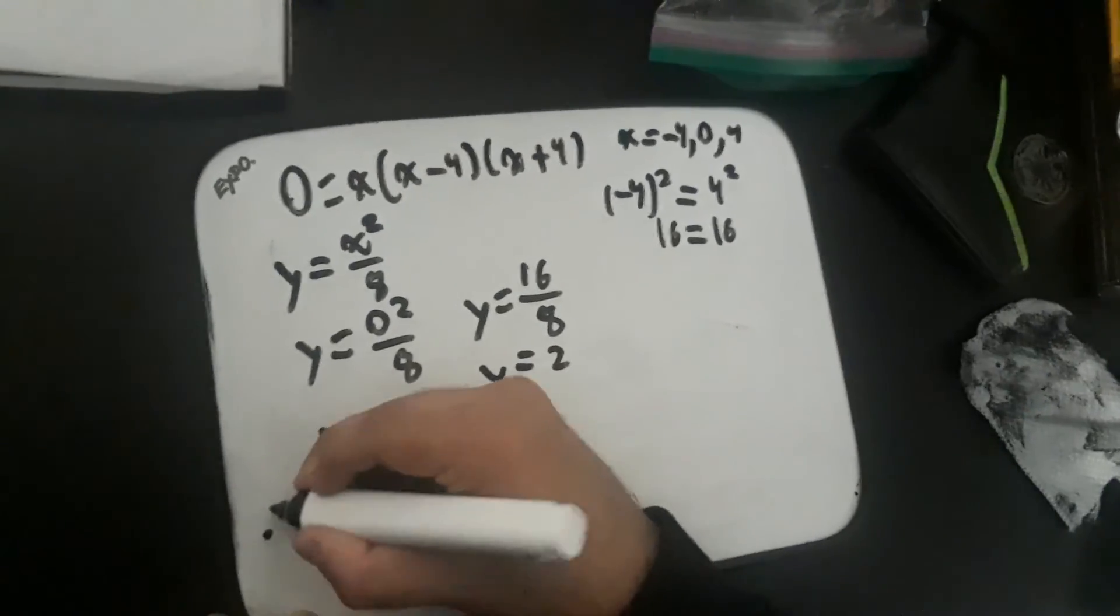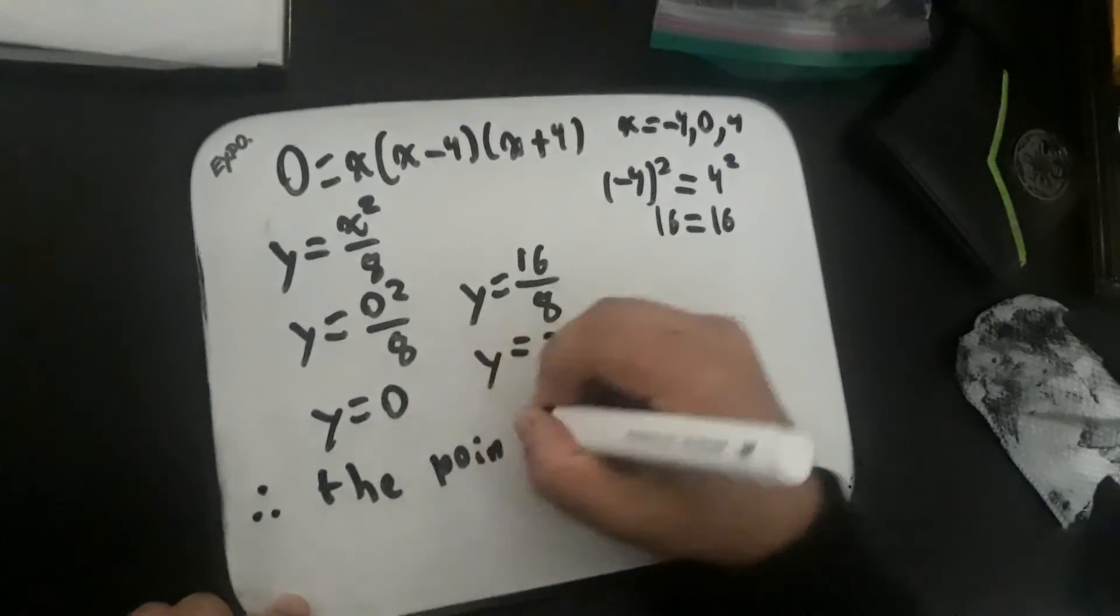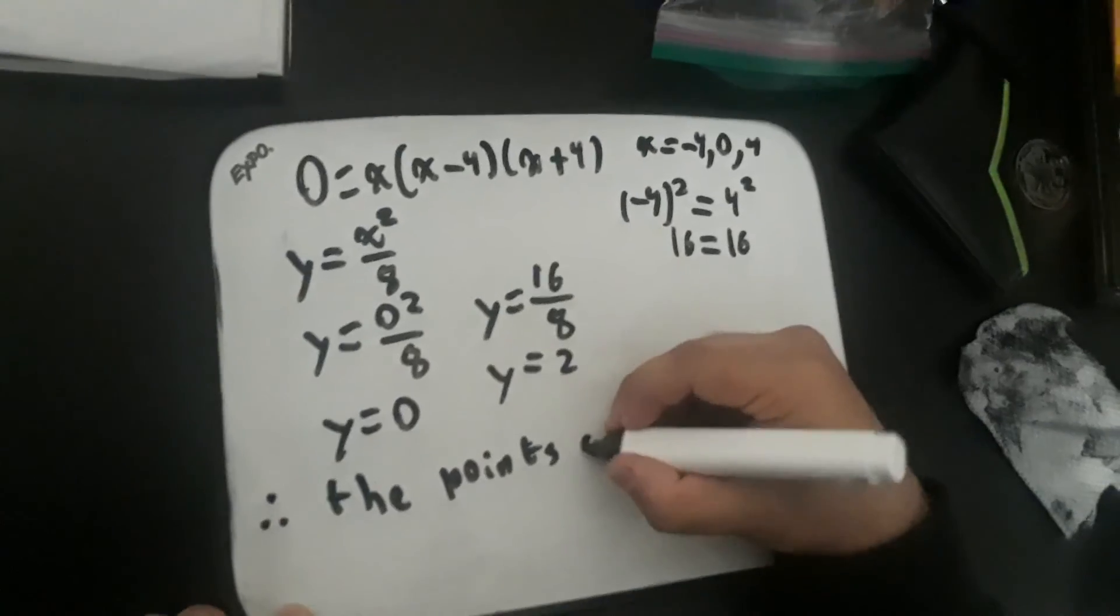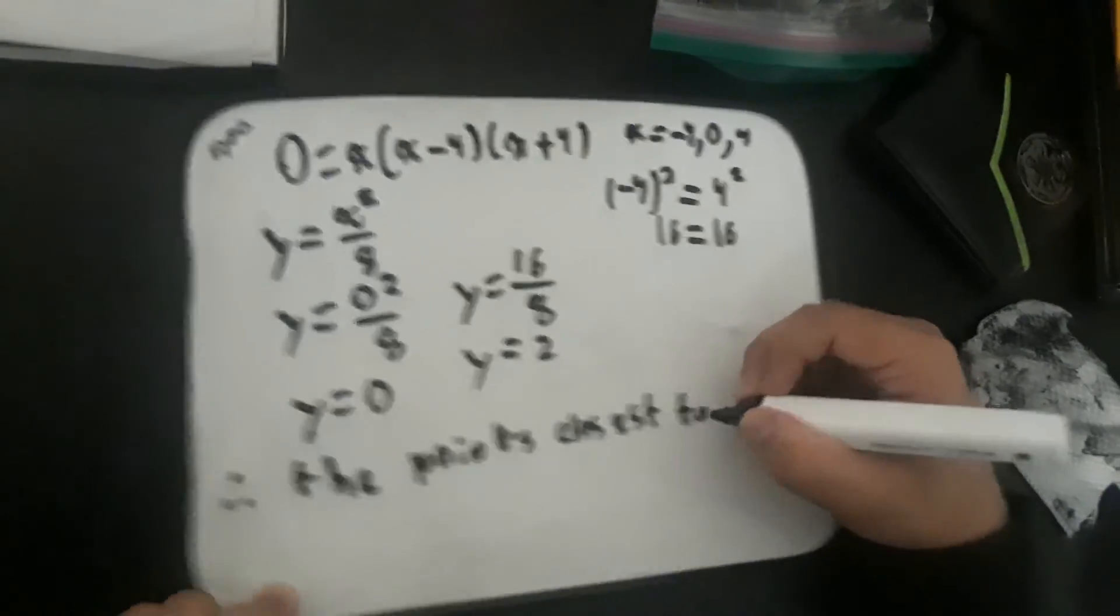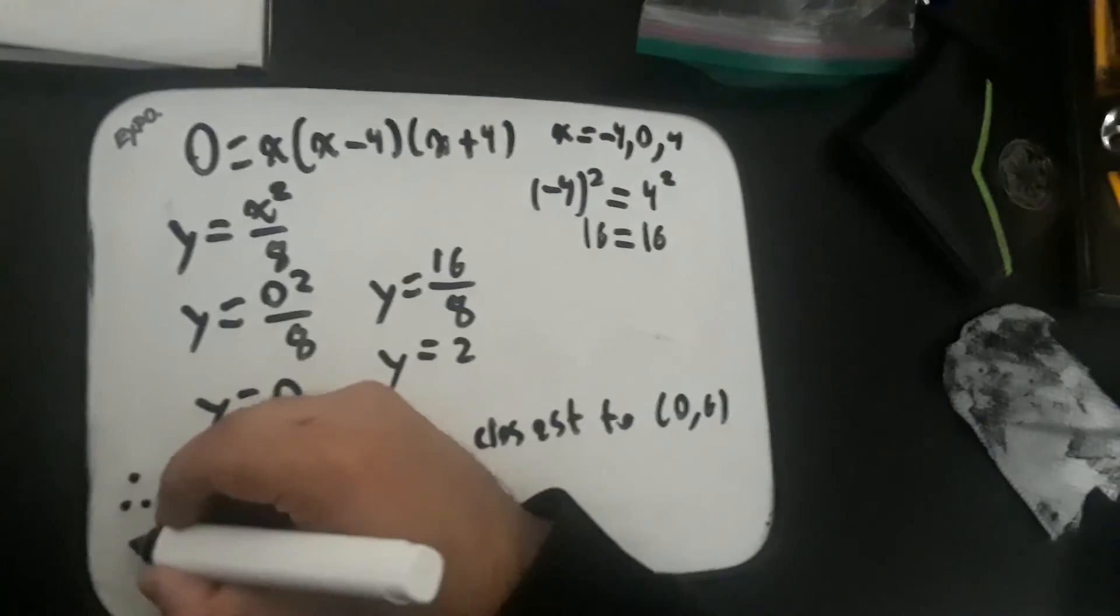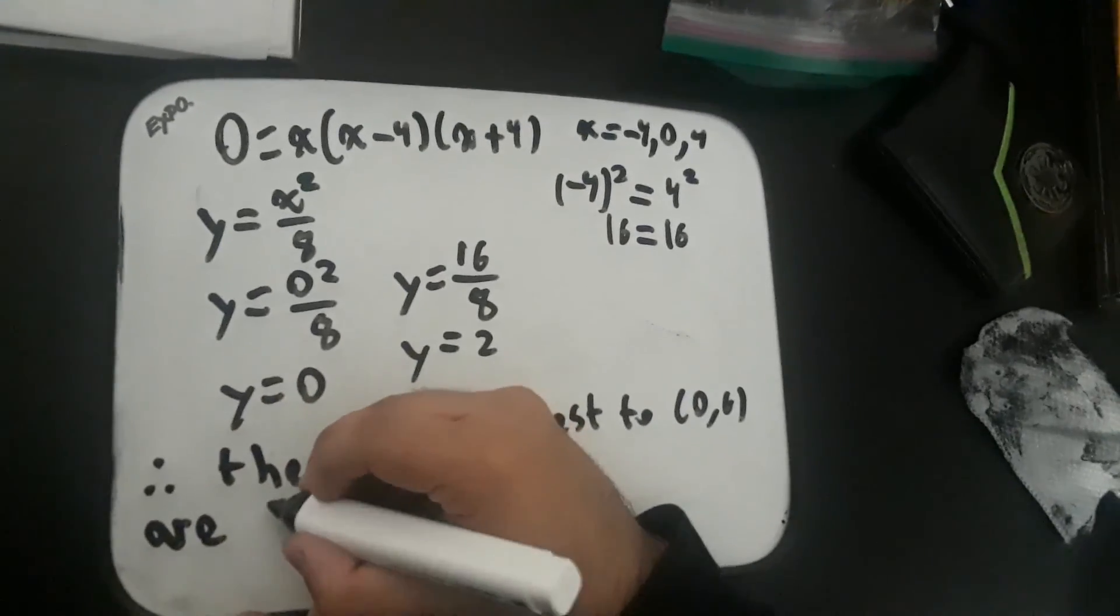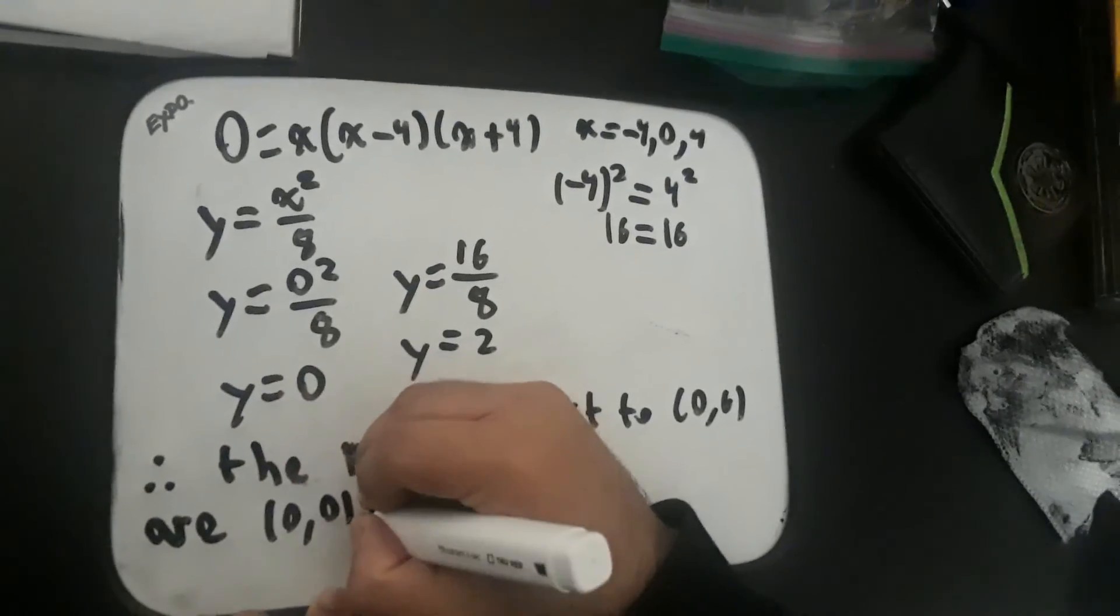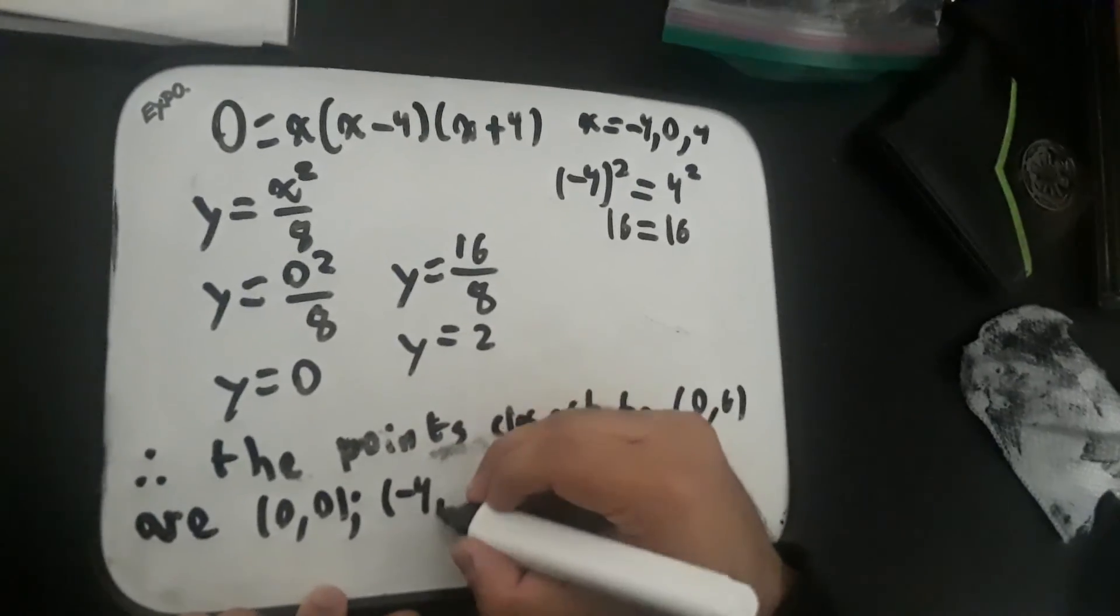Therefore, the points closest to (0,6) are (0,0), (-4,2), and (4,2).